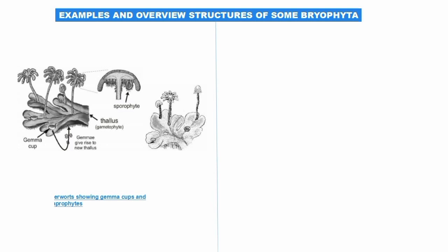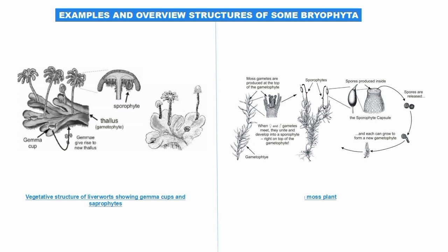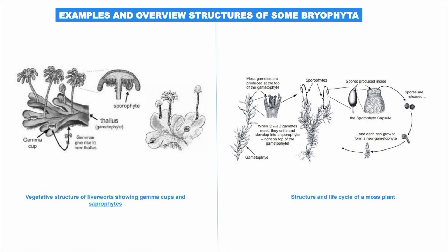Looking at the diagrams: the first diagram shows the structure of liverworts. Liverworts have an umbrella-like structure that produces gametes, called the sporophyte generation. On the thallus there is a cup-like structure called gemma cups which functions in asexual reproduction. The second diagram shows mosses and their life cycle — spore-producing structures at the top release spores, each of which can grow to form a new gametophyte, and the cycle continues.